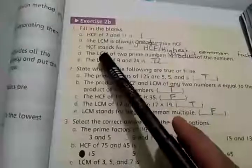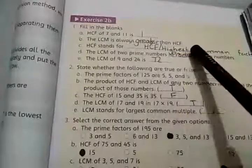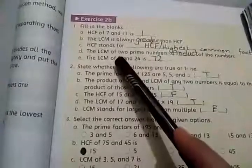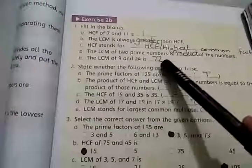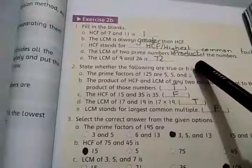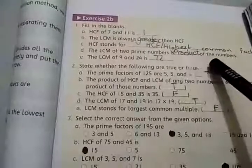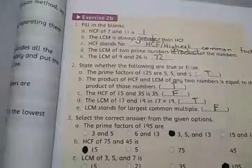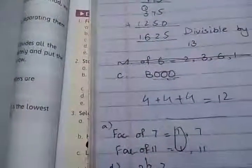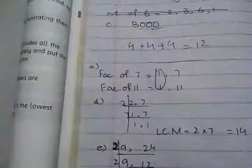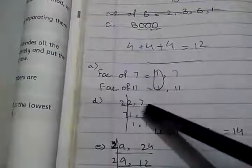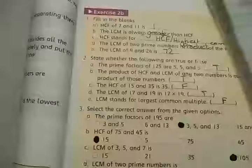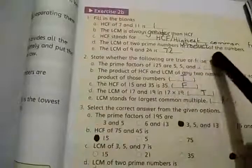Number C: HCF stands for dash — highest common factor. Number D: the LCM of 2 prime numbers is dash. The LCM of 2 prime numbers is always the product of those 2 prime numbers. For example, taking 2 prime numbers 2 and 7, their LCM is equal to their product. So we write here 'product'.